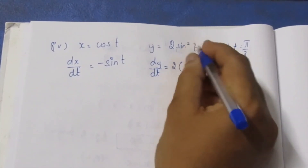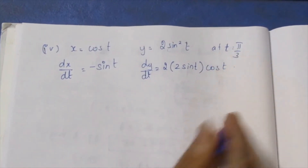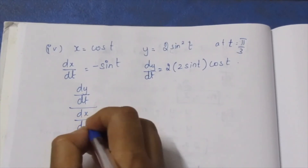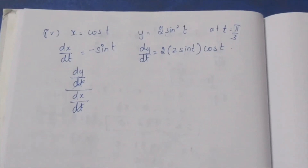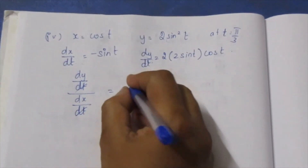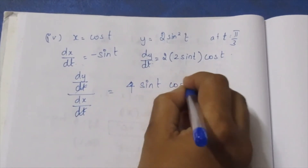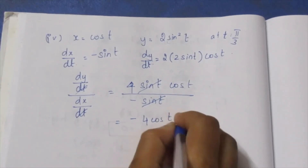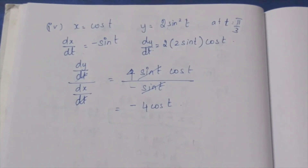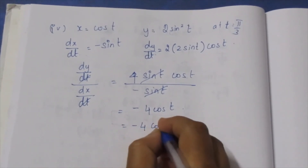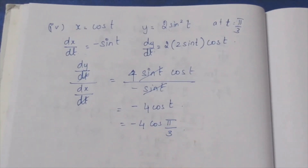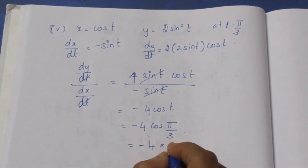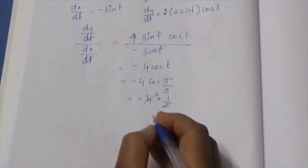So dy by dt equals 2sin t·cos t (by chain rule). Then dy by dx equals dy/dt divided by dx/dt: equals 2sin t·cos t divided by minus sin t, which simplifies to minus 2cos t. At t equals π/3, cos(π/3) equals 1/2, so dy by dx equals minus 2 into 1/2 equals minus 1. The slope is minus 2.